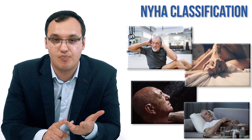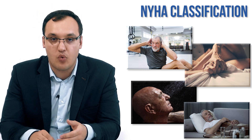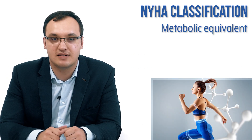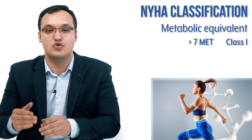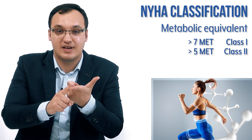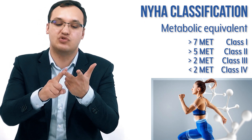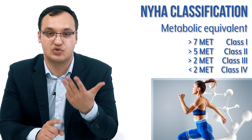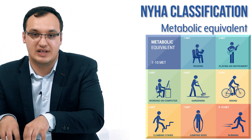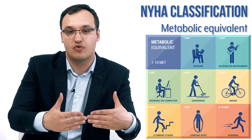So these four pictures should be in your mind: first is sport, second is sex, third is shower, fourth is bed. When we want to be more scientific, we can measure activity using metabolic equivalents, or METs. More than 7 METs: Class 1. More than 5 METs: Class 2. More than 2 METs: Class 3. Less than 2 METs: Class 4.